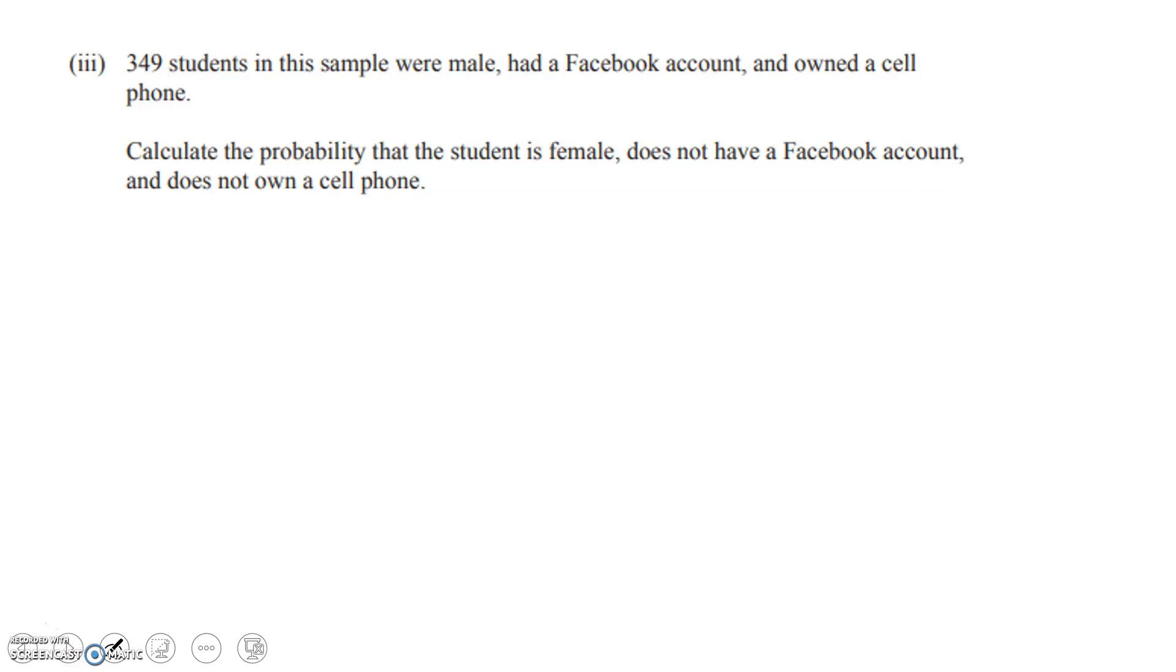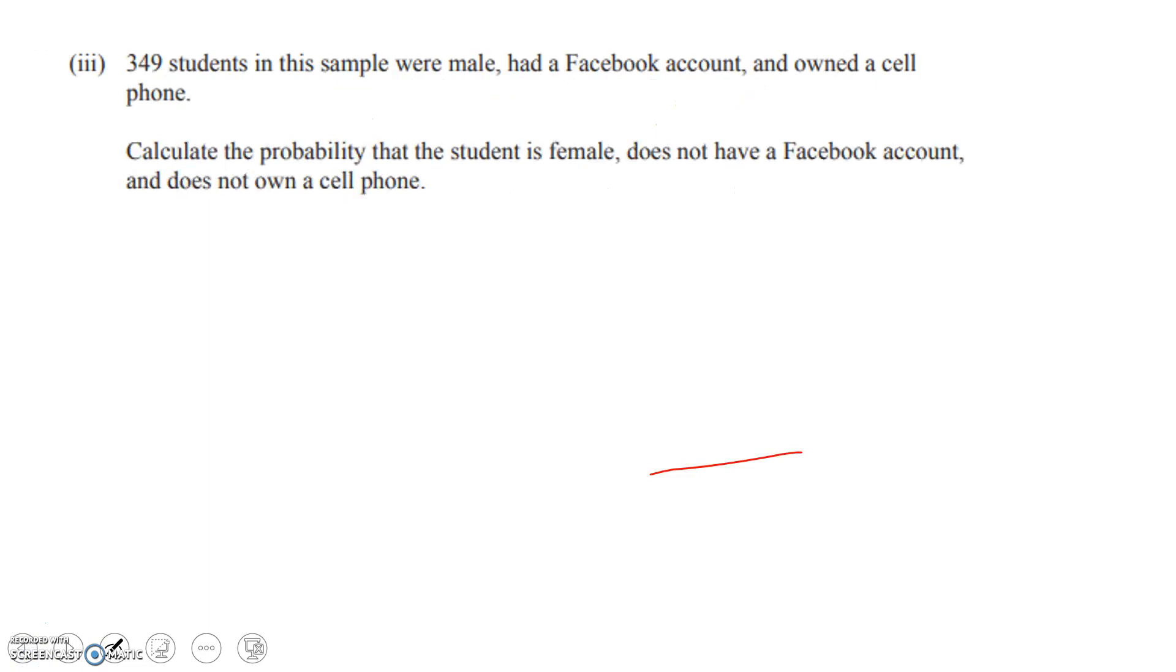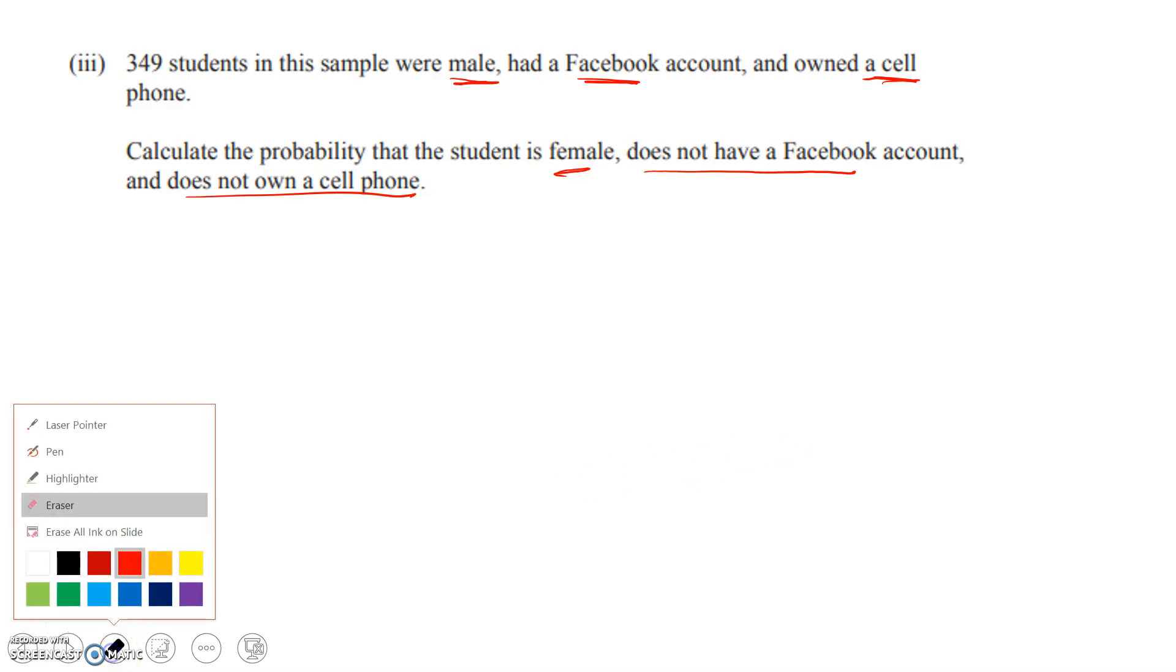We had information about gender, whether the student had Facebook or not, and whether they owned a cell phone or not. In this part of the question, we're told that 349 students in the sample were male, had Facebook, and owned a cell phone. We've got to figure out the chances that a student is female, doesn't have Facebook, and doesn't have a cell phone. That should suggest to you straight away that we're going to work with a Venn diagram.